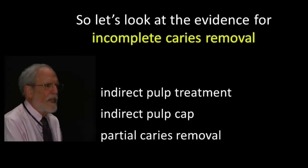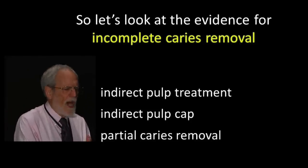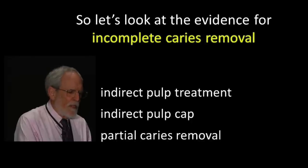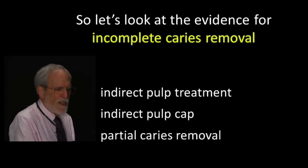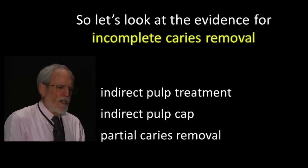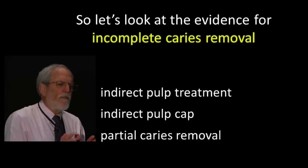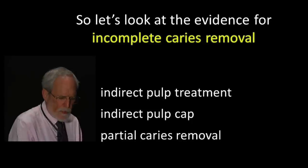Let's talk about incomplete caries removal and the evidence for it. This procedure is known by several terms: the most common are indirect pulp treatment, indirect pulp cap, and partial caries removal. There are two different ways to do it. The first is called one-step or single-entry: you do a cavity preparation on a tooth with a deep caries lesion, and you leave the carious dentin wherever you think removing it would expose the pulp or hit a pulp horn.